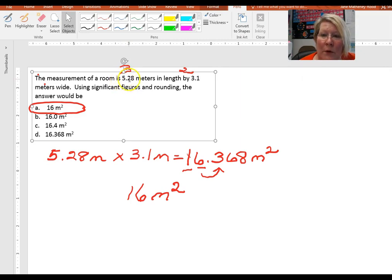If we look at 5.28, there are three significant figures in that number, and 3.1 has two significant figures. So our final answer can only have the number of significant figures that is the least accurate, which is 2. So the 1 and the 6 in this case will be significant.